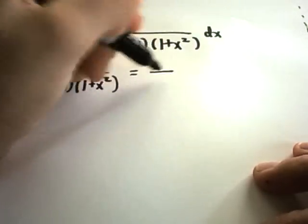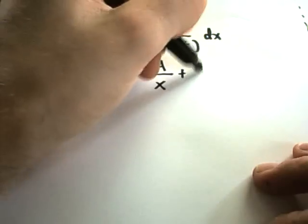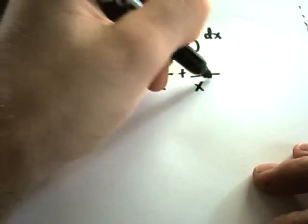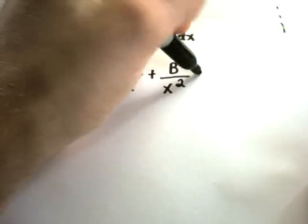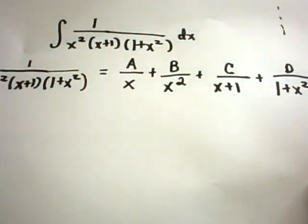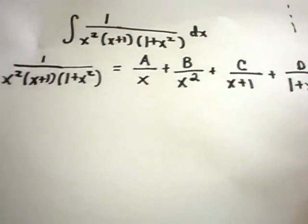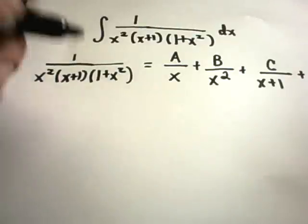We take our single x term and put a number a on top, then b over x squared, then c over x plus 1, and then d over 1 plus x squared. We multiply both sides by the denominator: x squared times x plus 1 times 1 plus x squared.